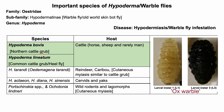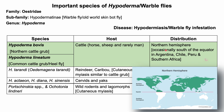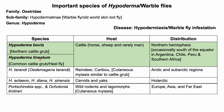The larval stages of Hypoderma bovis and Hypoderma lineatum are known as ox warble. These flies are mostly distributed in many countries of the northern hemisphere, and both species are considered major economic pests of domestic cattle. The disease caused by Hypoderma species, particularly by their larval stages, is called hypodermiasis, or warble fly infestation.